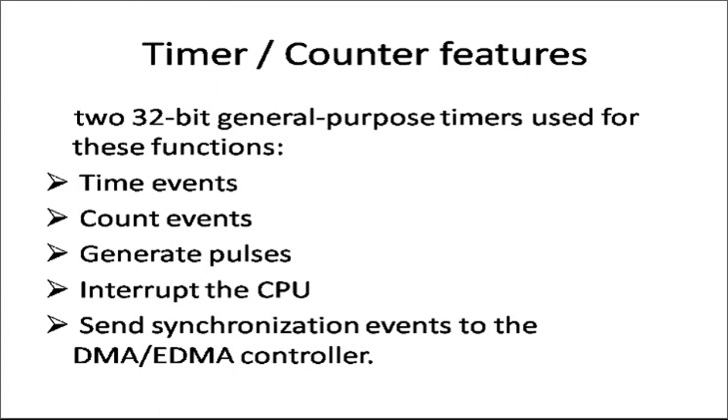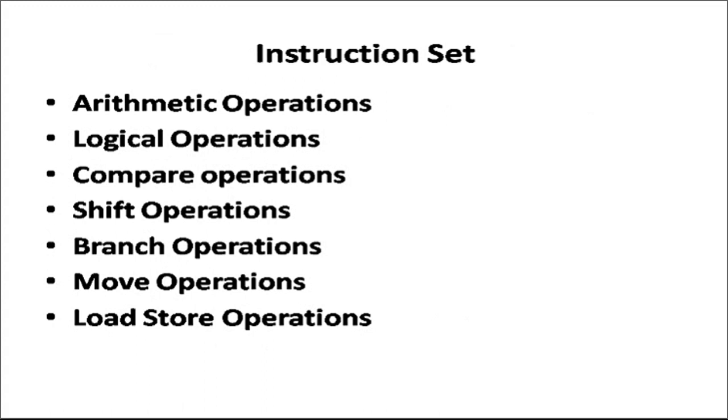Next point in the unit is instruction set. So we will cover this instruction set point and then we will stop. There are different types of instructions in the C67X processor namely arithmetic operations, logical operations, comparison operation, shift operation, branch operation, move operation, and load and store operation. We will try to cover these instructions depending on the functional unit which we have studied.